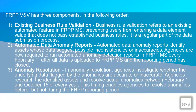FRPP Validation and Verification, or VNV, has three components. Business rule validation refers to an existing automated feature in FRPPMS preventing users from entering a data element value that does not pass established business rules — it is a regular part of the data submission process. Automated data anomaly reports identify assets whose data suggest possible inconsistencies or inaccuracies. Agencies are required to run automated anomaly detection reports in FRPPMS every February 1st after all data is uploaded and the reporting period has closed. In anomaly resolution, agencies investigate whether the underlying data flagged by anomalies are accurate or inaccurate, and research and resolve actual anomalies between February 1st and October 15th of every year.